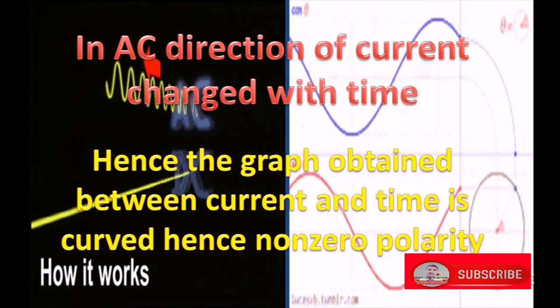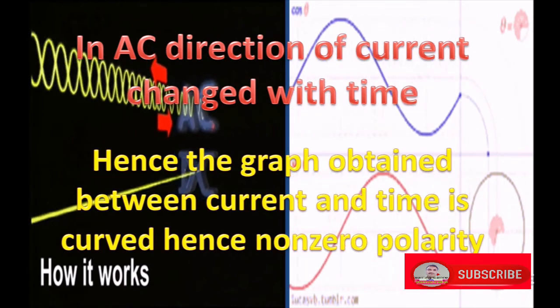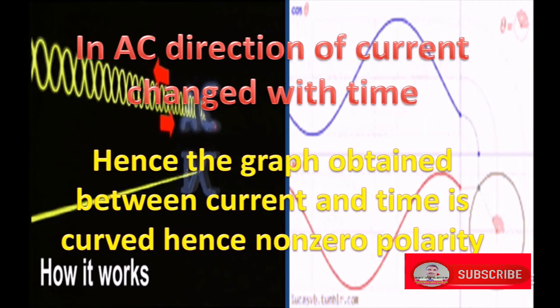Hence the graph obtained between current and time is curved due to the change in direction, resulting in non-zero polarity.